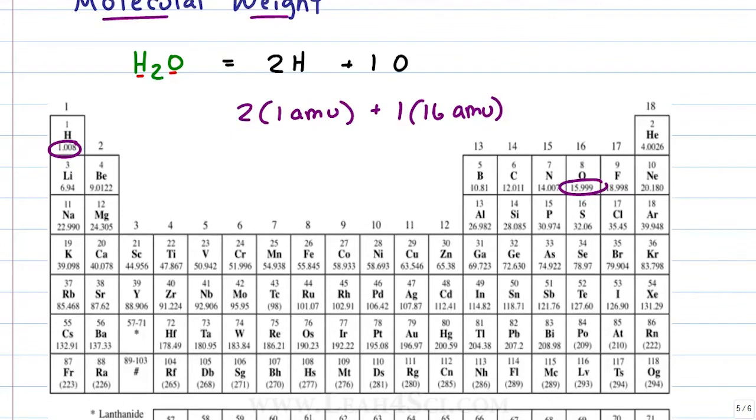But back to the water example, we multiply 2 hydrogens times 1 amu is 2 plus 1 oxygen times 16 amu is 16. 2 plus 16 gives us 18 and that means the molecular weight of one individual molecule of water is 18 atomic mass units.